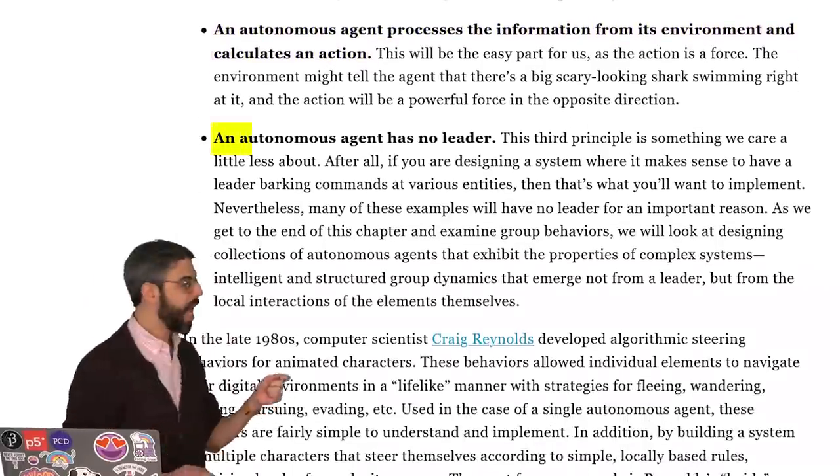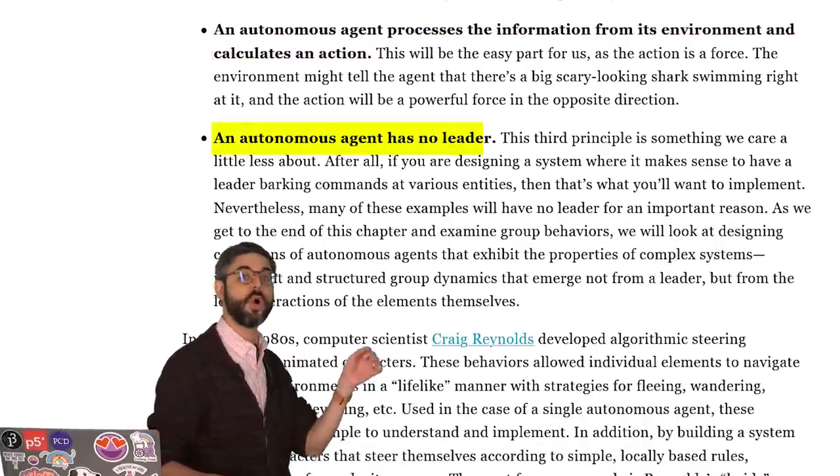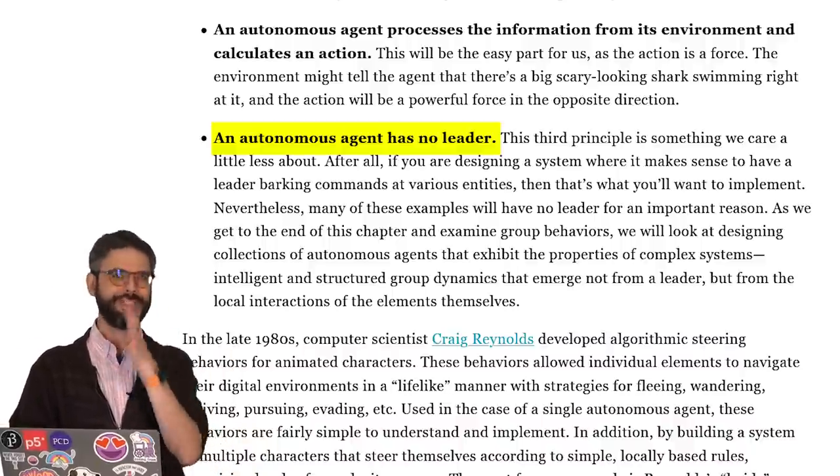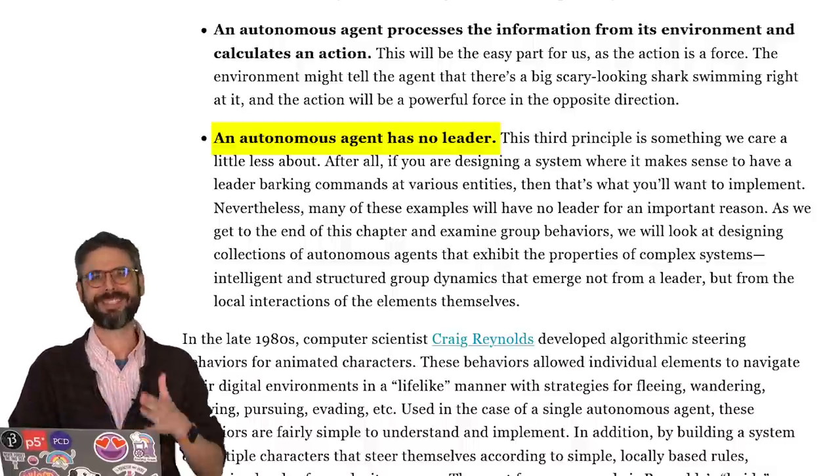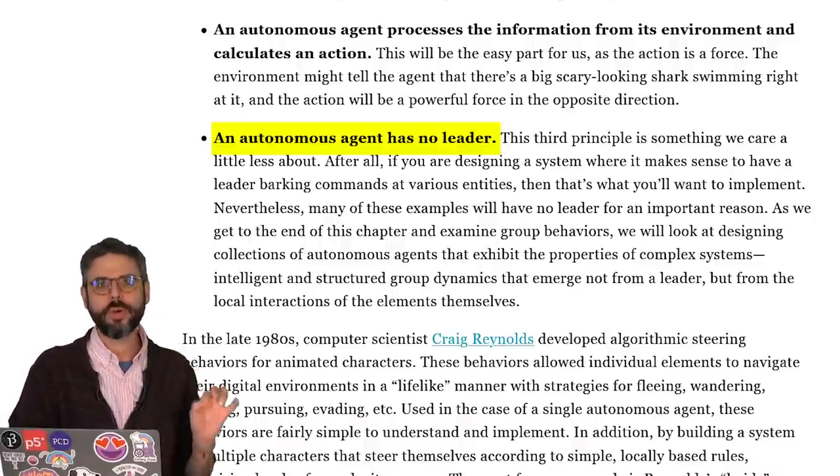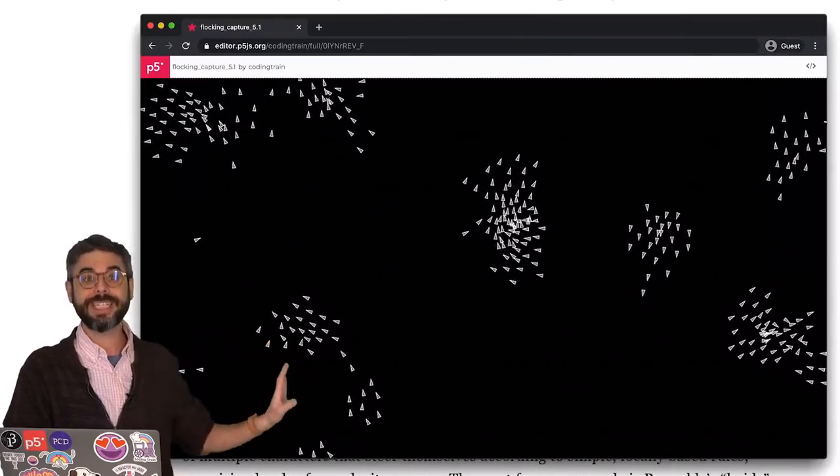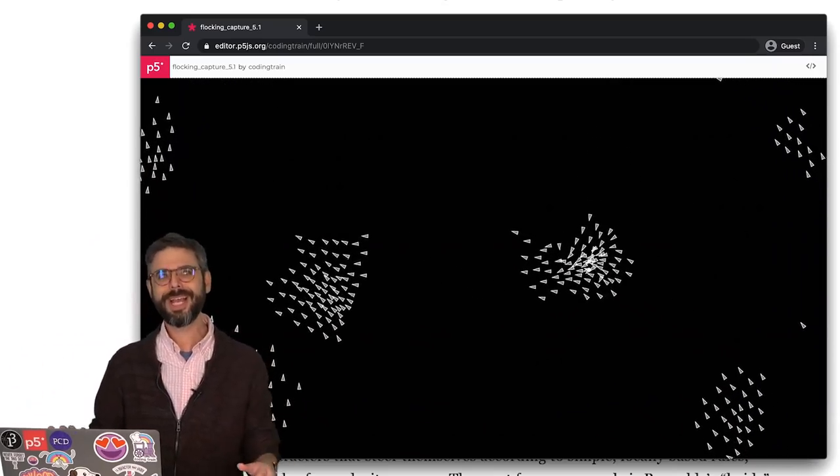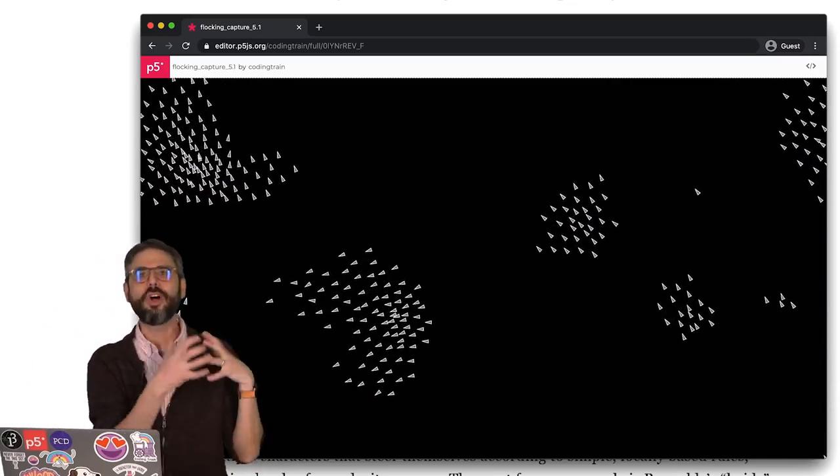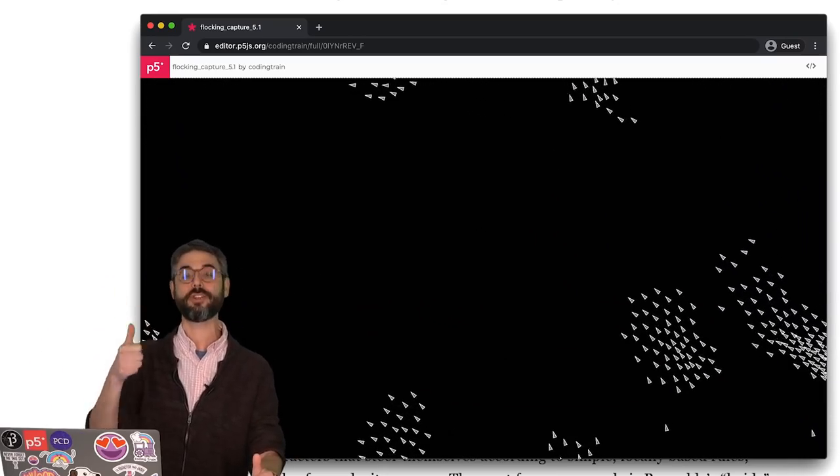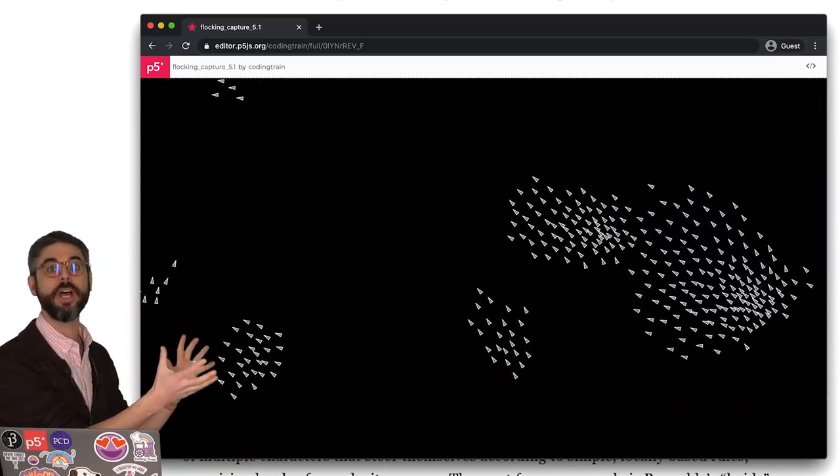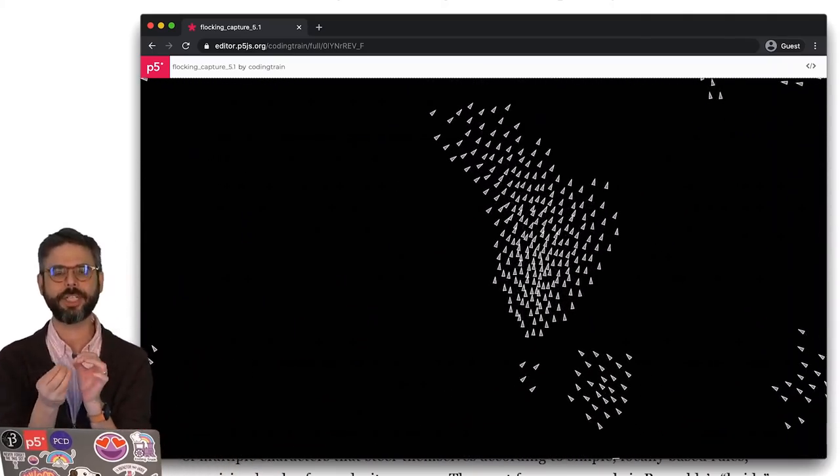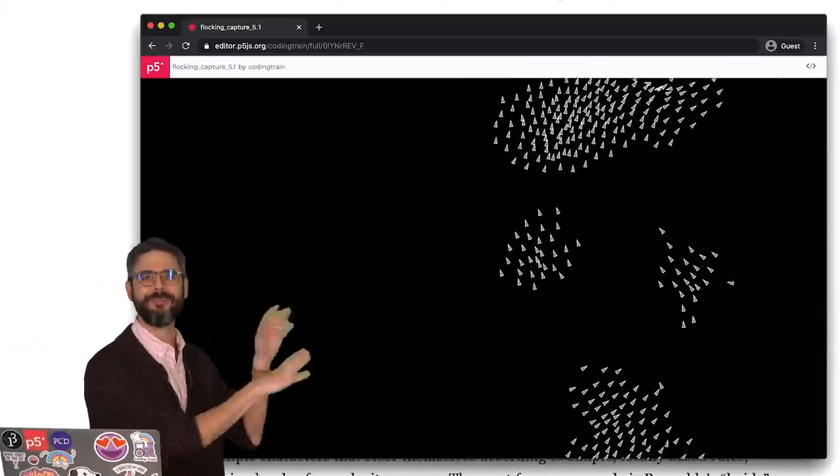An autonomous agent has no leader. Now, this is not necessarily a hard and fast rule in what you should always do when you're programming things in P5.js, but it is an important, critical note here in terms of this flocking example. This is an example of a complex system, a system that is more than the sum of its parts. It exhibits a kind of global intelligence, and yet that global intelligence does not come from a single leader. There's no one leading the flock around. The behavior, the emergent behavior that you're seeing,